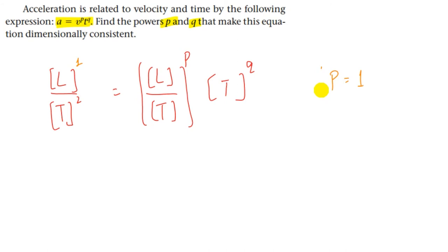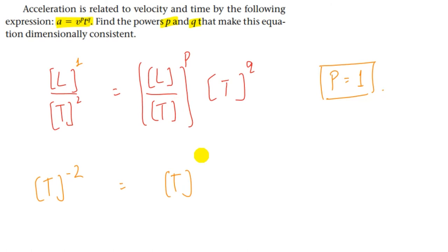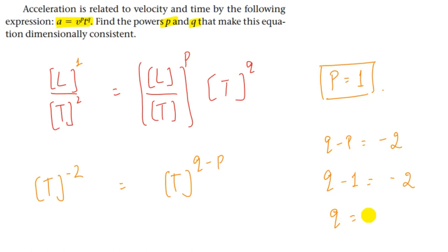Next, comparing the power of T: on the left it is T⁻², and on the right we have T^(q − p). So q − p = −2. Since p = 1, we get q − 1 = −2, therefore q = −1. The final answers are p = 1 and q = −1.